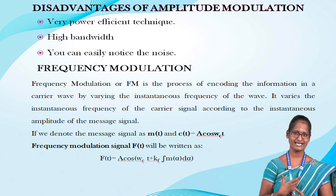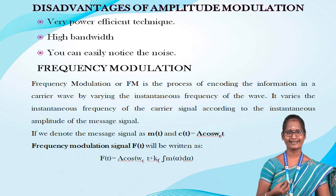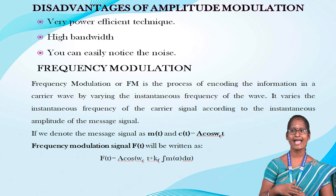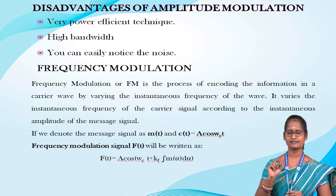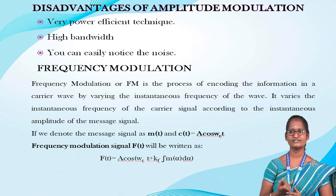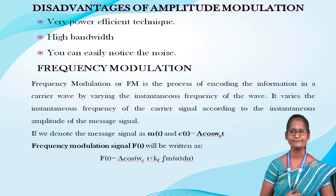Disadvantages of amplitude modulation: it is not a very power efficient technique. AM requires a very high bandwidth equivalent to that of the highest audio frequency. Amplitude modulation is very susceptible to noise, and you can easily notice the noise. The usage of amplitude modulation is AM radio communication. The radio broadcasting is a main example of amplitude modulation.